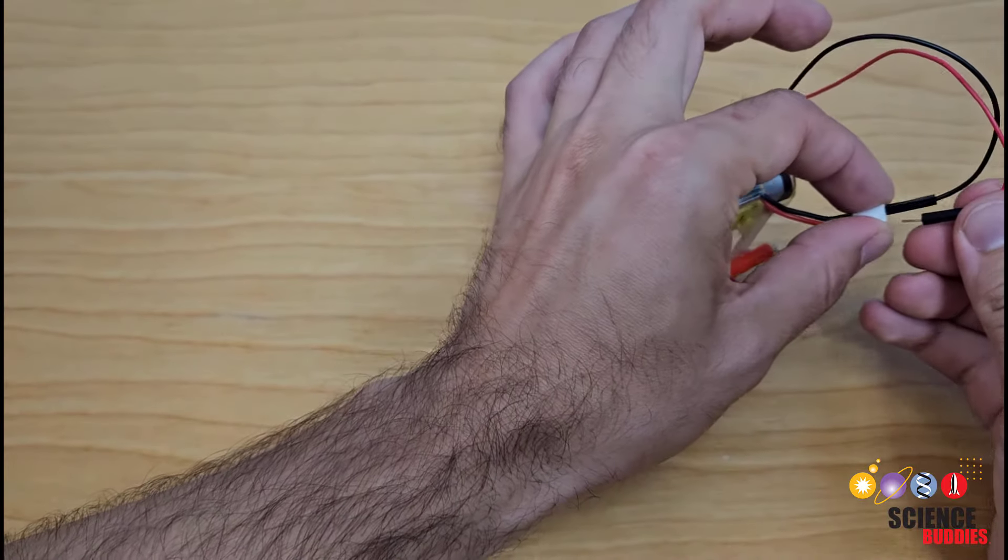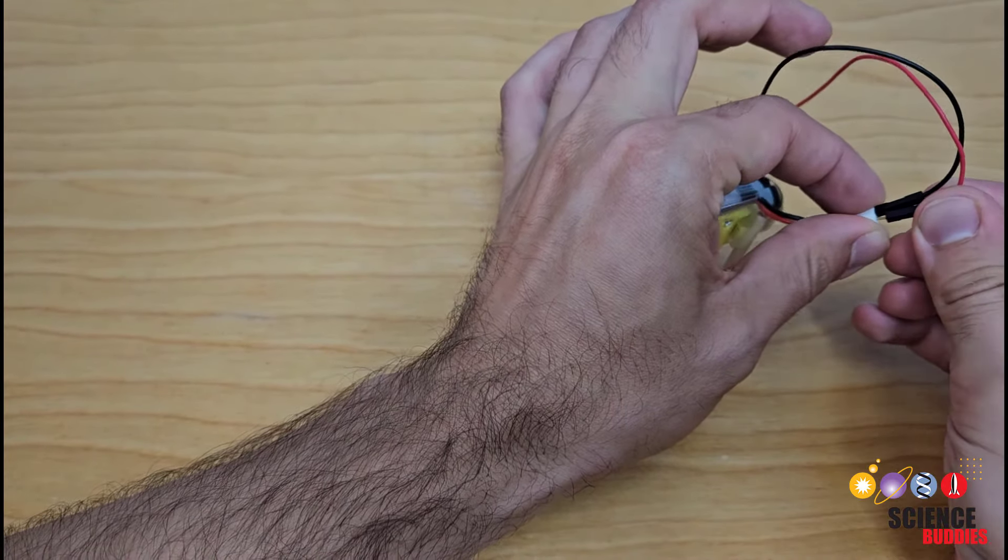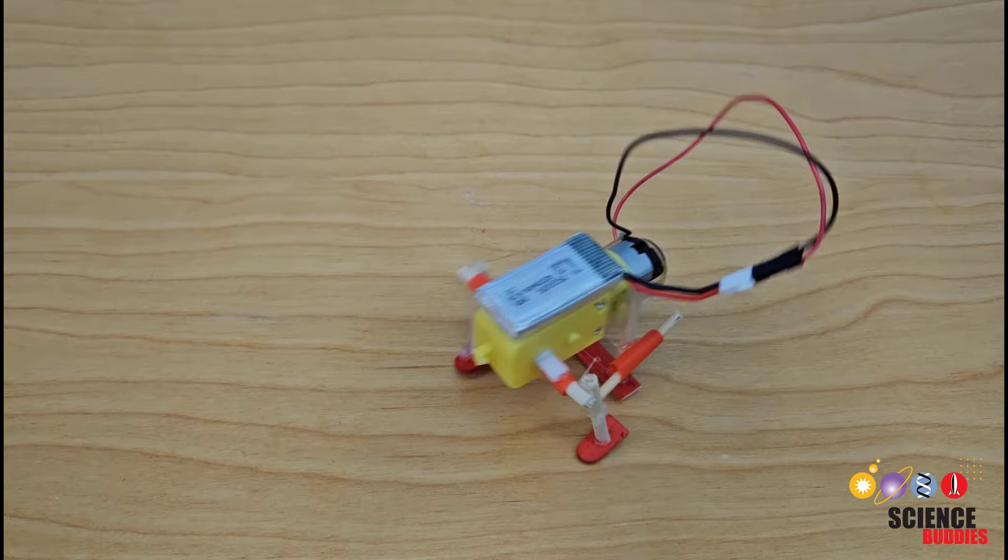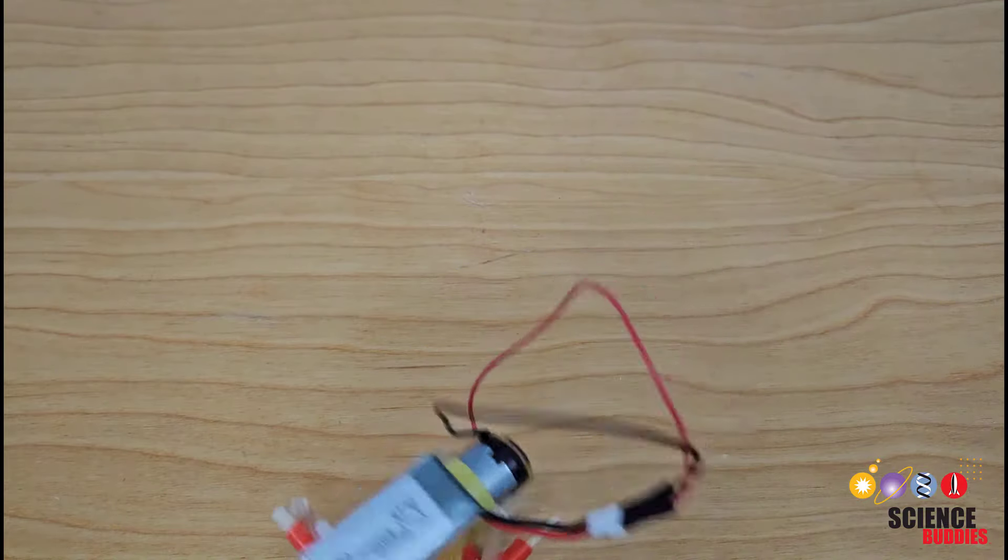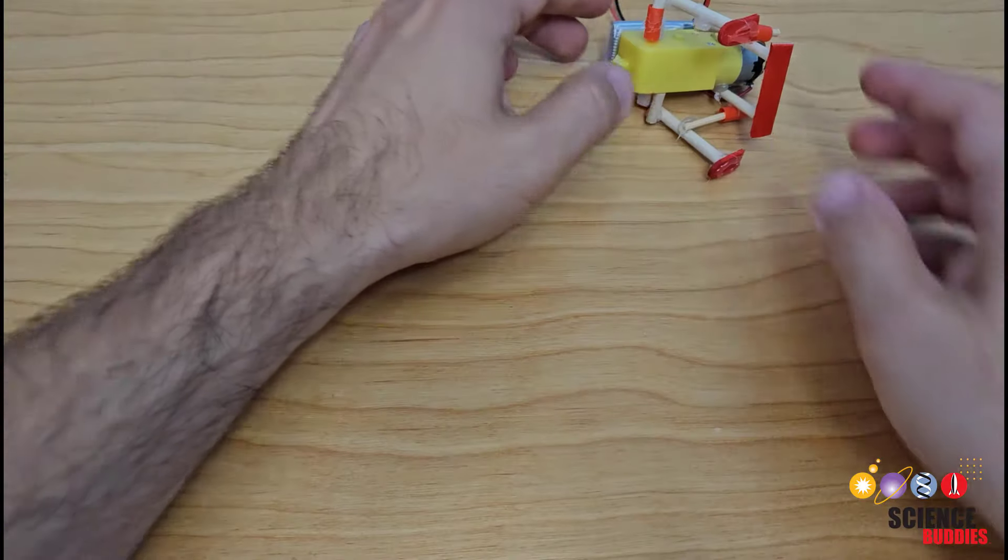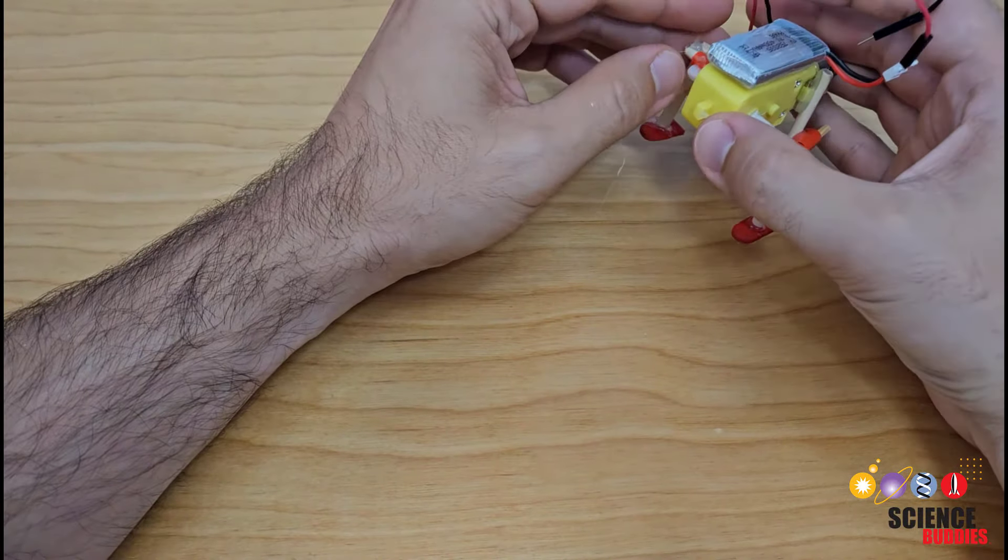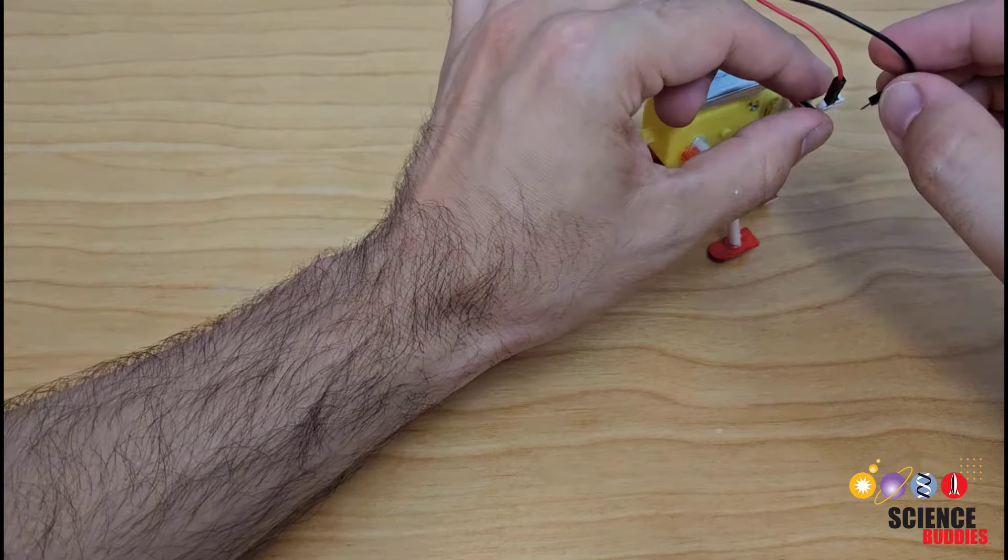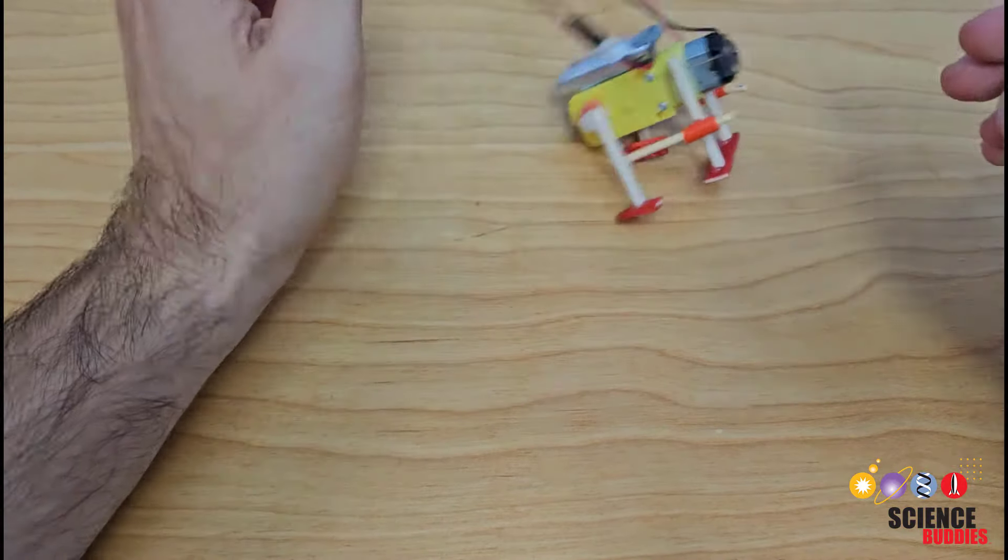So when you're ready, you can connect both wires and watch your robot start to walk. Things might not always go perfectly on the first try and that's okay. You might need to adjust the spacing or length of some of the linkages in your mechanism to prevent the legs from falling out or your robot from falling over.